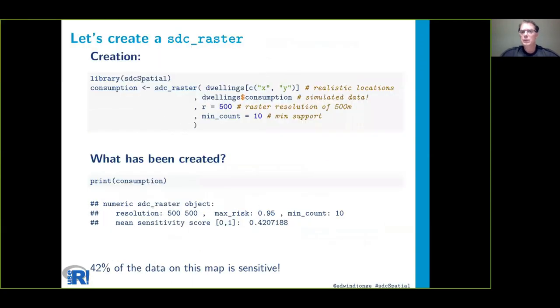Those are two simulated variables: consumption and unemployment. If you create an sdc_raster object, you will see that 42% of this particular example is sensitive.